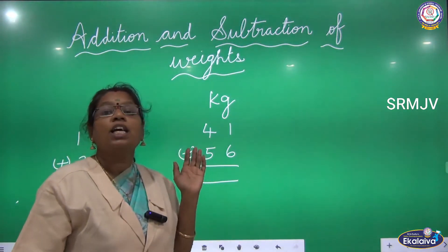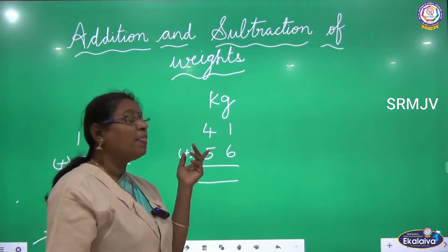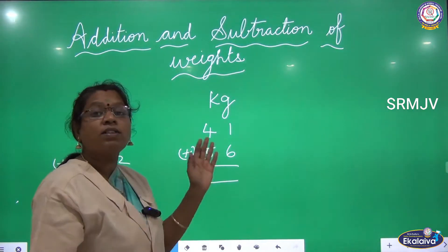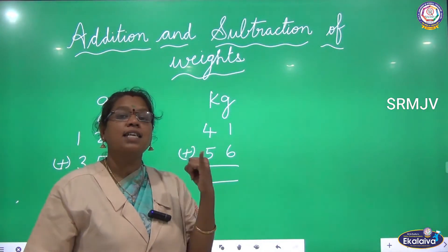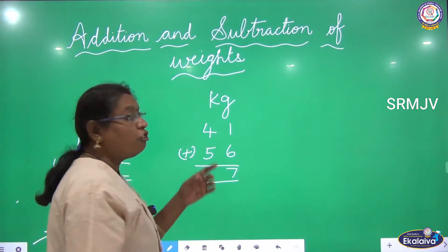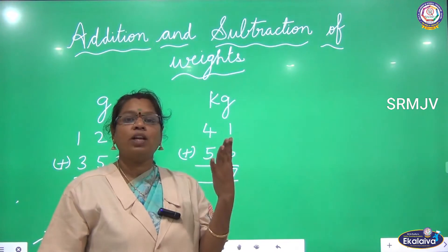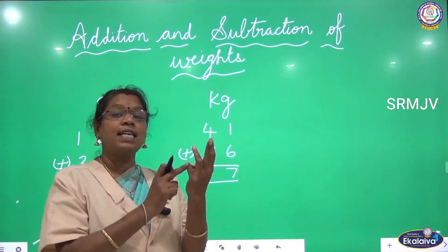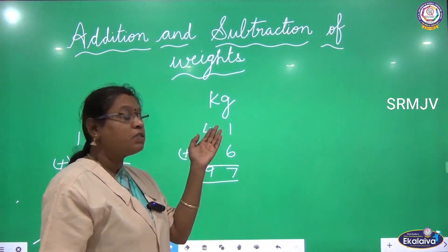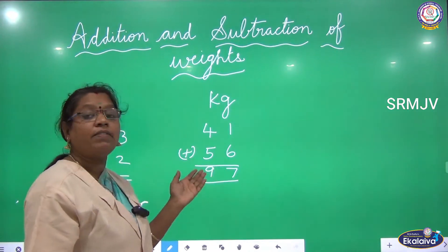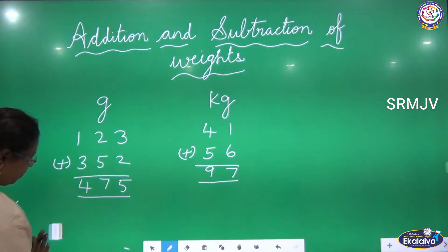Now we are going to add kilograms. We have 41 kilograms added to 56 kilograms. To add these numbers we start from the right side: one and six — six in the mind, one in the finger — six, seven. Now four and five: the bigger number should be in the mind, so five in the mind, four in the finger — five, six, seven, eight, nine. When we add 41 kilograms with 56 kilograms we get 97 kilograms. We should mention the units when writing the answer.